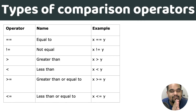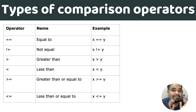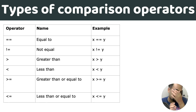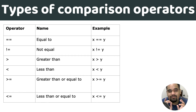Let's look at the comparison operators. Double equal-to (==) means 'equal to' — if x == y, you get 1 if true, 0 if false. Not equal-to (!=): if x is not equal to y, you get 1; if x equals y, you get 0.